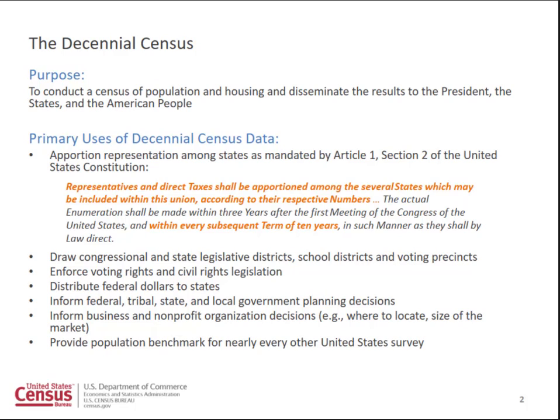This census will be like no other census we've ever taken. And if you've been around demography or around the census, you've heard us all say that every decade. Every decade we say this census will be like no other census. Looking back until 1970, that was really the last time we made wholesale changes. After 1970, we took a census every 10 years, but what that census really was is something we call the n-plus-one — we take the design of the last census, tinker a little bit at the edge, and roll it out.